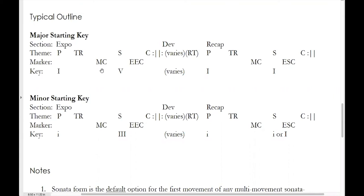At the MC, the sonata could either be in the primary tonal area or the secondary tonal area — so this could be either a half cadence in tonic or a half cadence in dominant. But there will in most cases be a medial caesura separating the first half of the exposition from the second half. The second half of the exposition is in the secondary key area, and assuming a major mode piece, we're going to modulate to the major dominant. S will drive to a perfect authentic cadence, ending with essential expositional closure — the EEC — and then if there is more material, we'll have the closing theme after that.